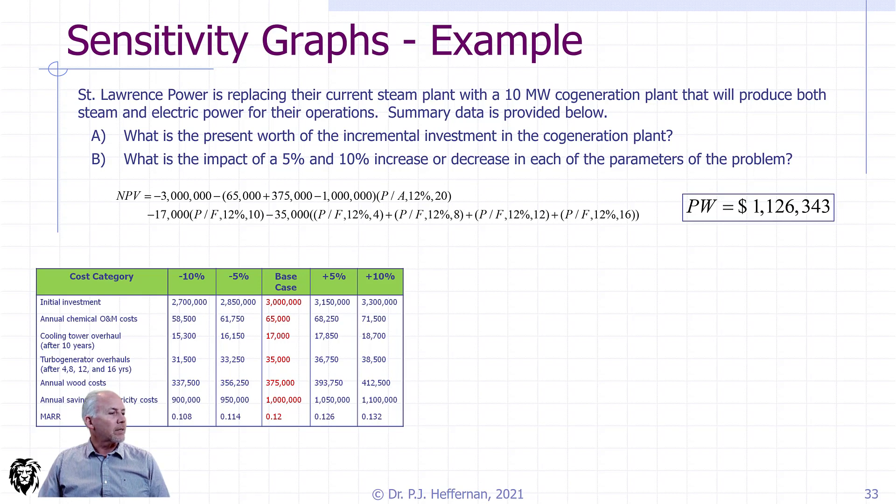I've done up a table. This table is basically doing horizontally what we did in our little table on the last slide. We have the base case, and then we've modified the parameters, plus or minus 5% and 10% for each of those parameters. And then we'd have to recalculate the present value to see how sensitive the net present value or the present worth is to it.